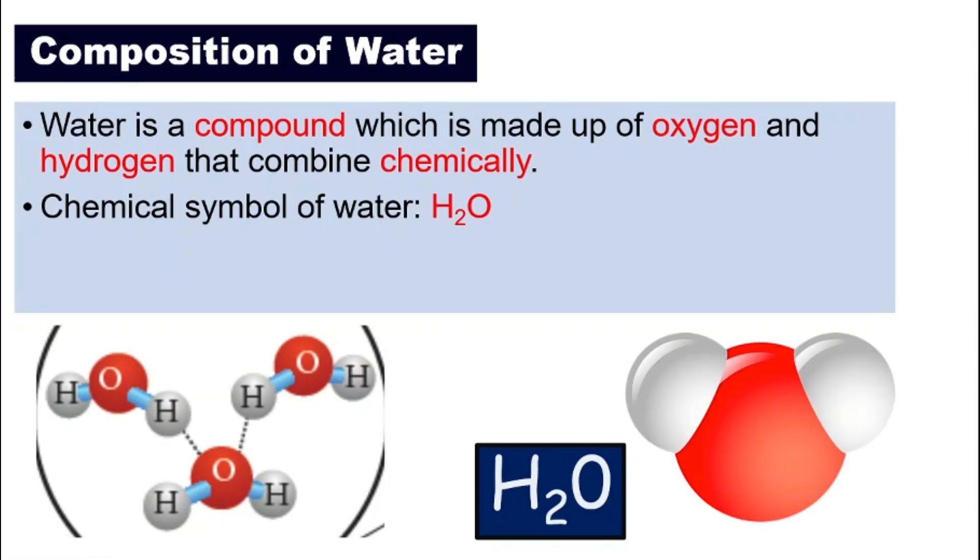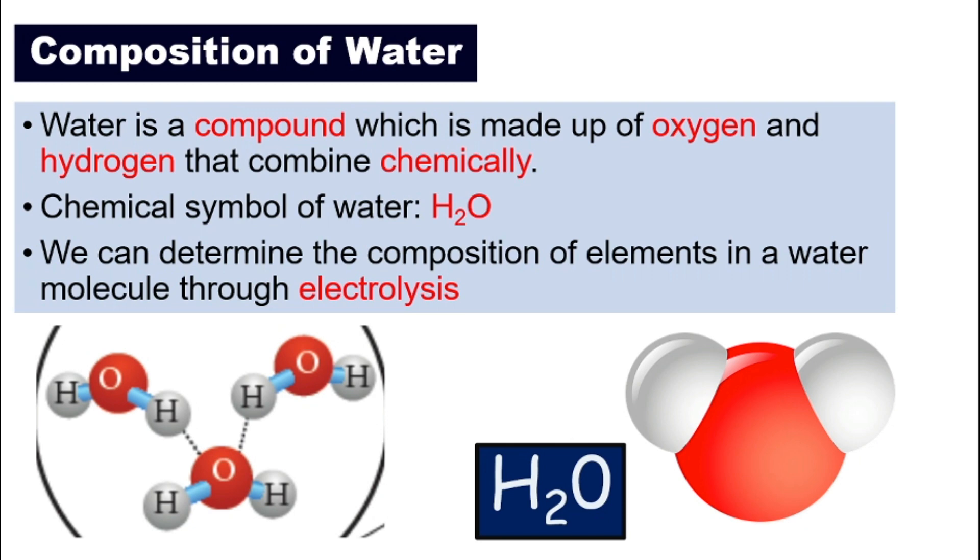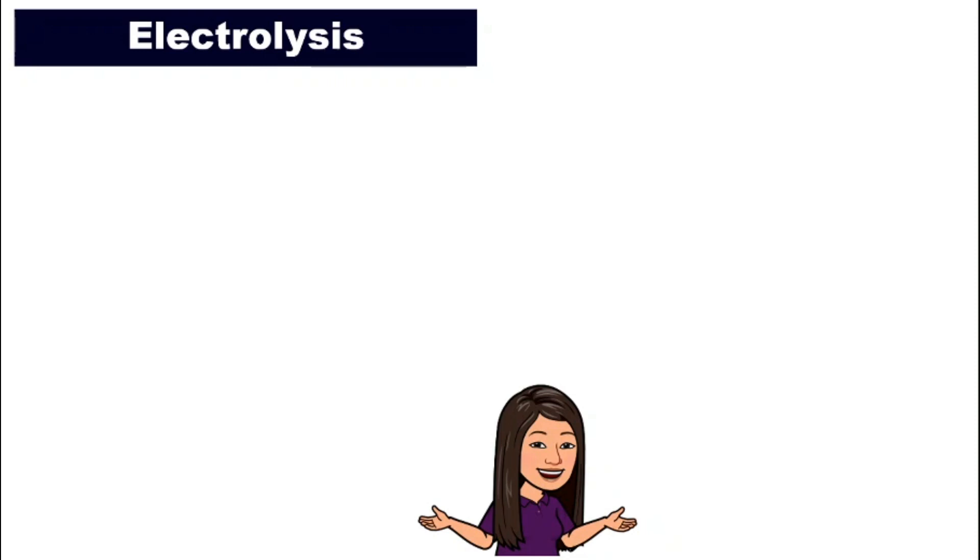And Jeku Teo likes to tell the students that water molecules are like Mickey Mouse. Look at this picture. Doesn't it look like Mickey Mouse? It has two ears and the ears are hydrogen. That's why we have H2O. Two hydrogen and the face will be oxygen. And we can determine the composition of elements in a water molecule through a process called electrolysis. This is what the main topic is all about. Electrolysis.